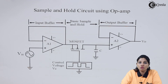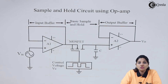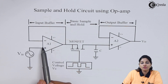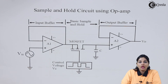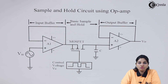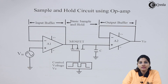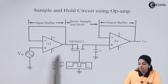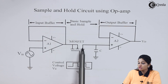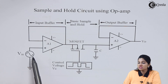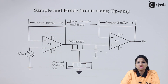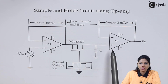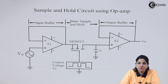When the control voltage Vc is applied to the gate terminal of the MOSFET, the MOSFET turns on — that means when Vc equals 1, MOSFET turns on. Due to this, the capacitor is connected to input buffer A1, and the capacitor charges to the instantaneous value of input voltage VIN. When Vc equals 0, the MOSFET turns off and capacitor C is disconnected from the input buffer. The capacitor cannot discharge through output buffer Op-Amp A2 because the Op-Amp has high input impedance. Therefore, the capacitor holds the charge until the next sampling cycle.